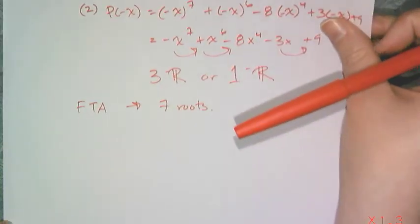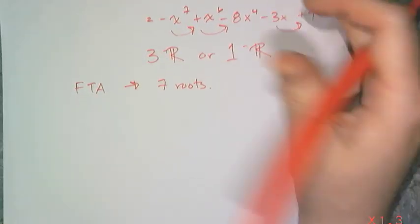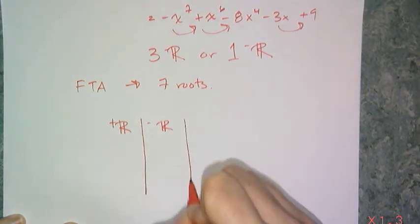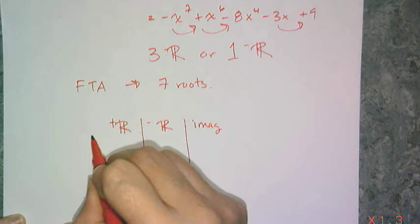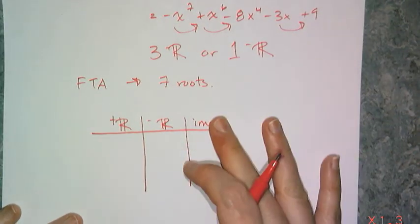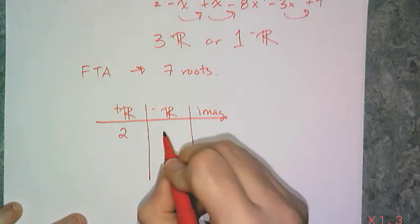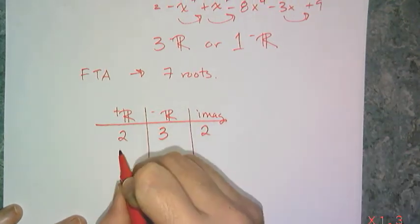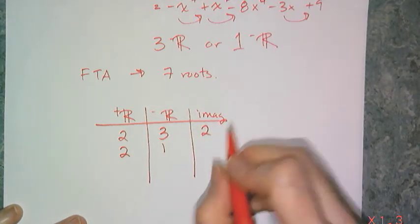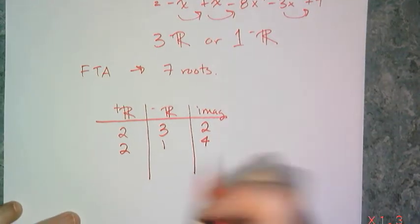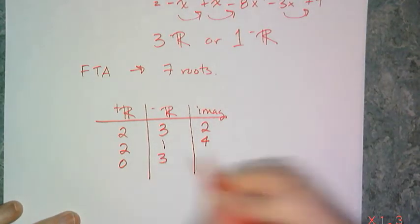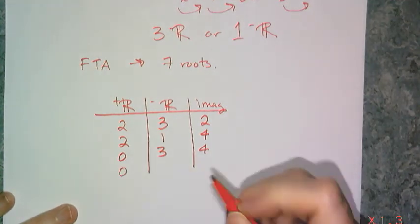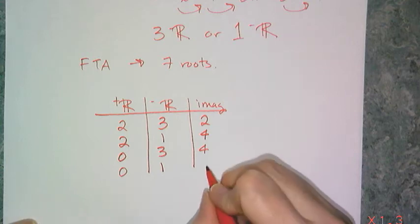I actually have to put the possibilities in a table with columns for positive real, negative real, and imaginary — not complex, because they're all complex, but imaginary. I can have 2 positive real and 3 negative real roots, leaving 2 imaginary; or 2 positive real and 1 negative real, leaving 4 imaginary; or 0 positive real and 3 negative real, leaving 4 imaginary; or 0 positive real and 1 negative real, leaving 6 imaginary. So one of these is true.